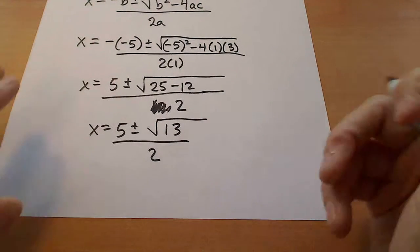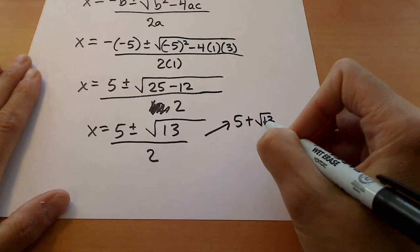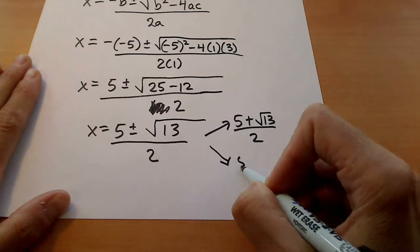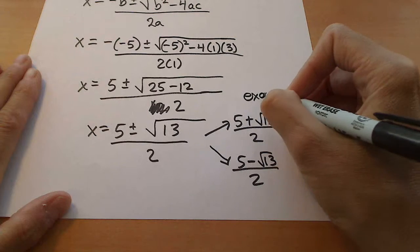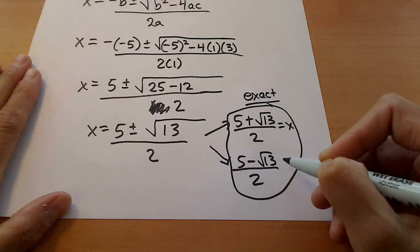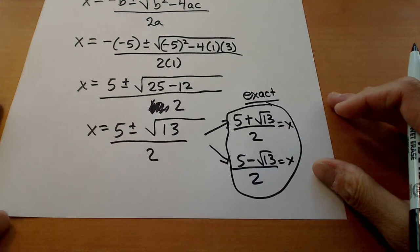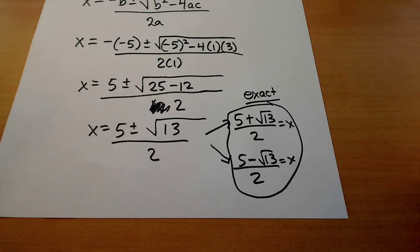Now, the exact answers are this. We have two exact answers here. It's 5 plus the square root of 13 over 2 and 5 minus the square root of 13 over 2. So these are our exact answers. Remember, exact means that they are left in the form where you have the radical there.